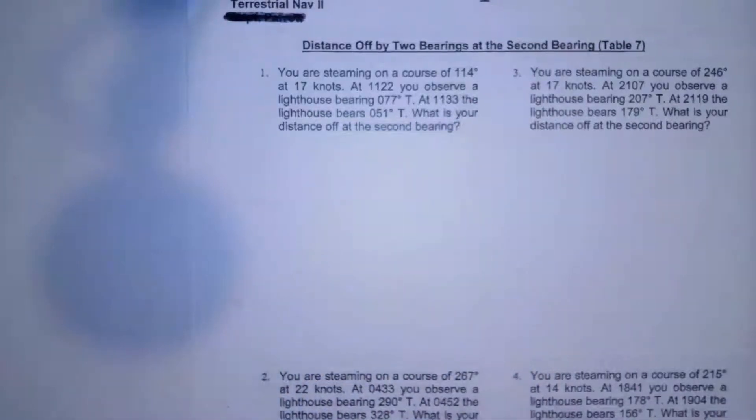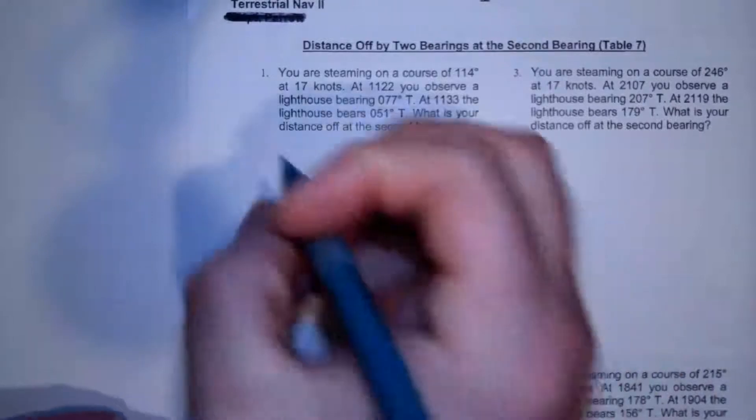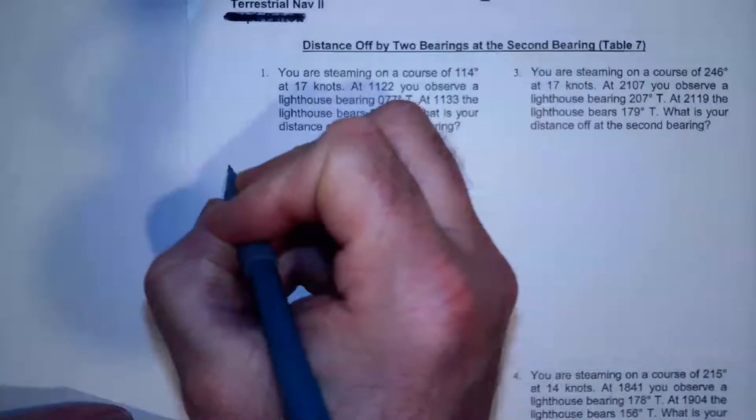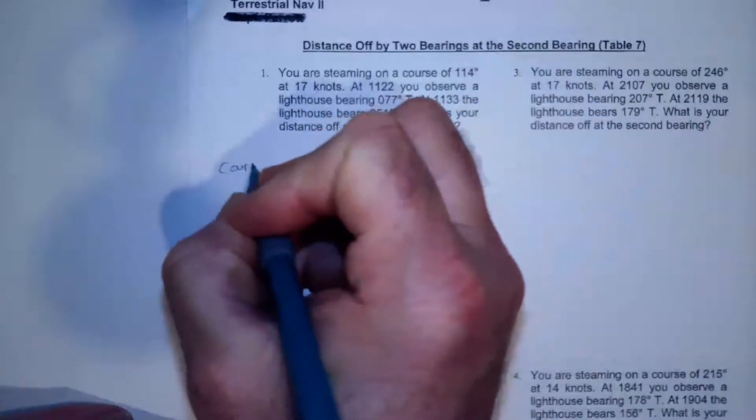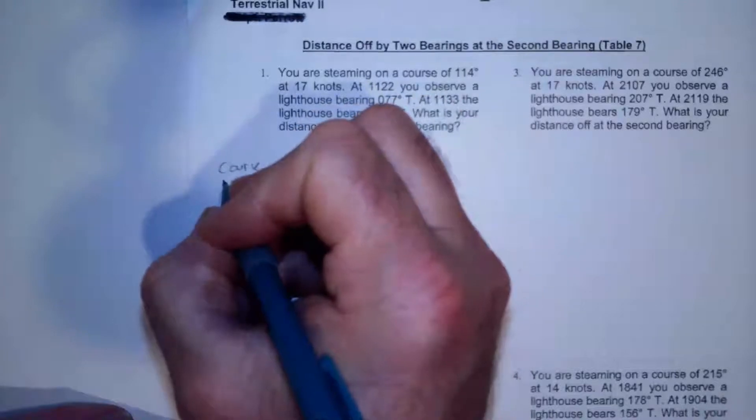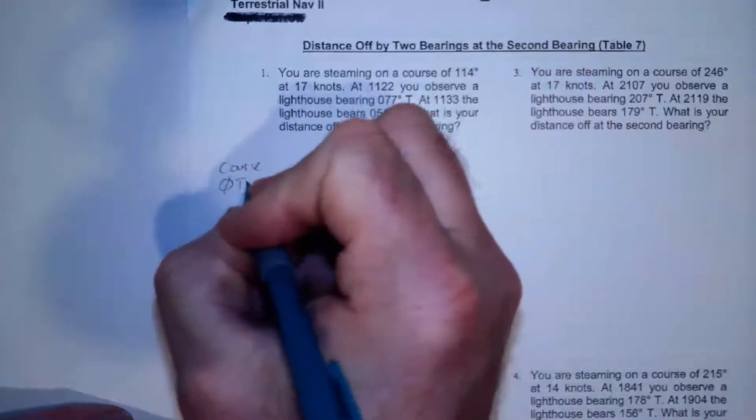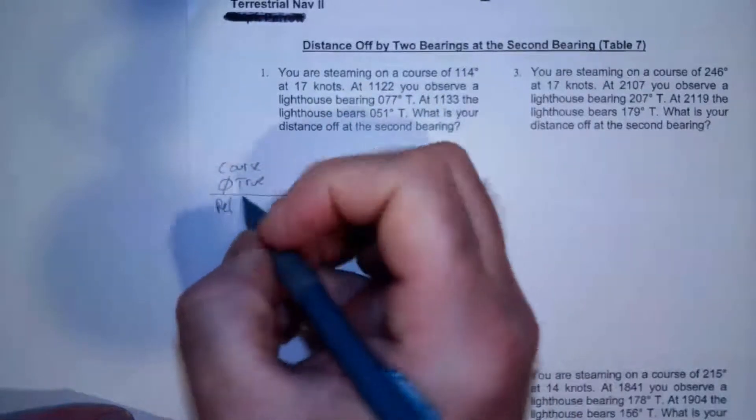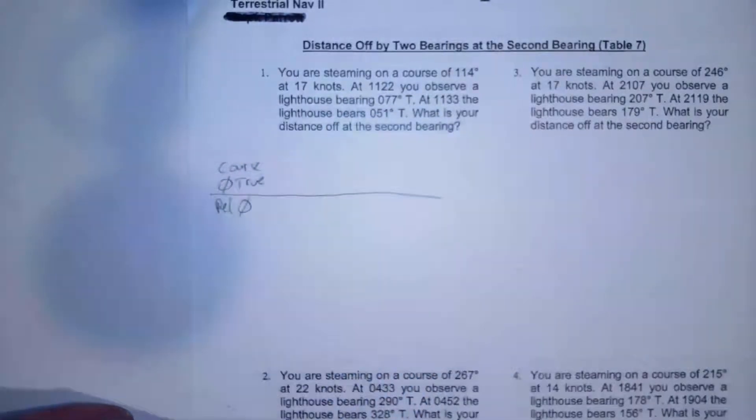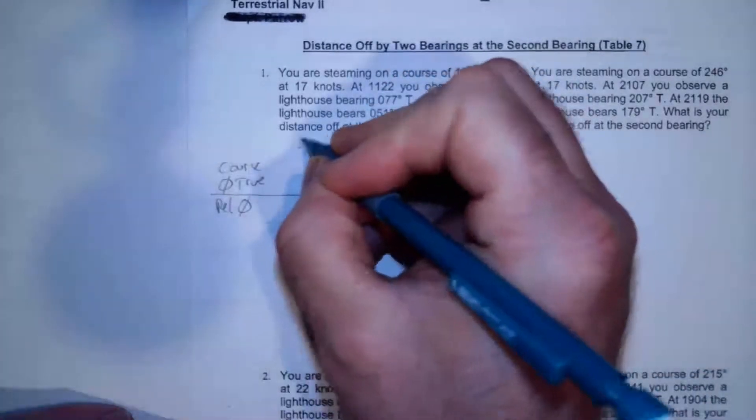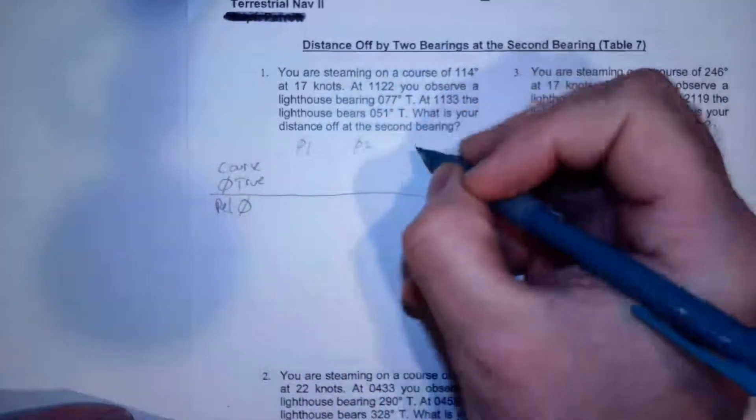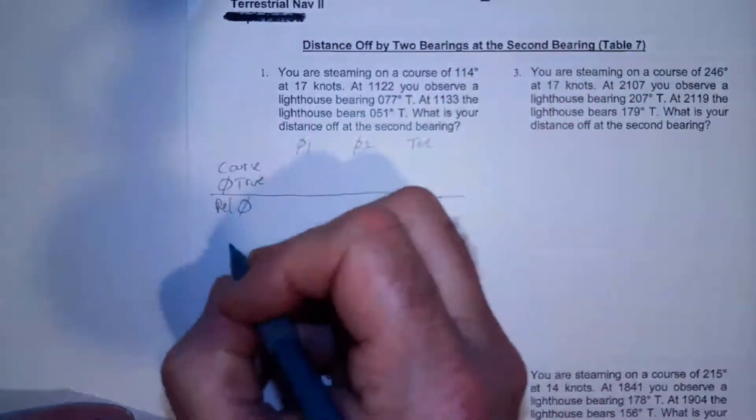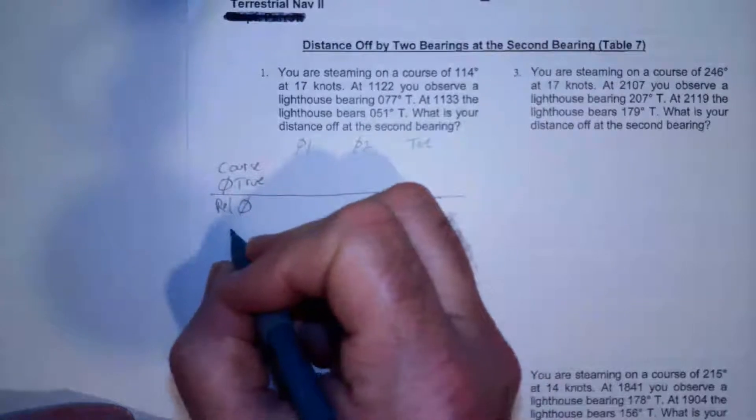I'm going to go ahead and set up, I got a little system that I use for this. We're going to have course, we're going to have true bearing, and then we're going to have relative bearing. We're going to calculate that, and then we're going to have bearing one, bearing two, and time over here. I'm anticipating that I might have four factors, and we'll deal with that as they come along.